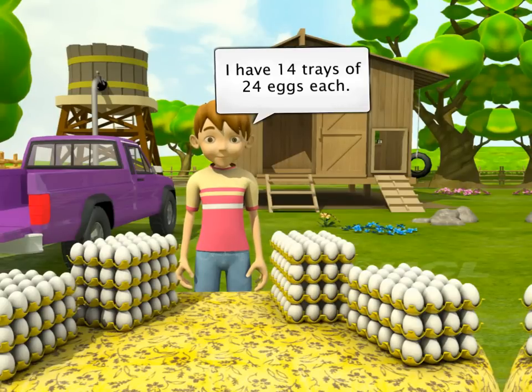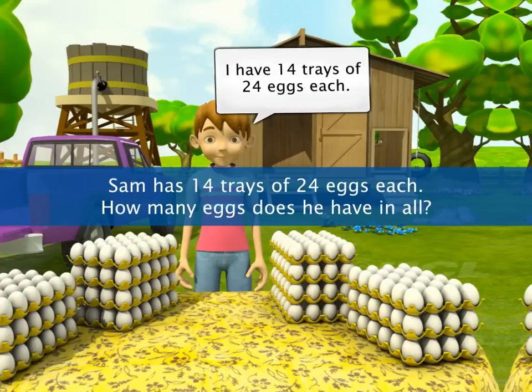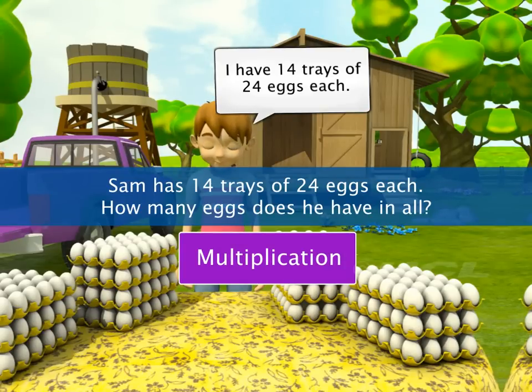Sam has 14 trays of 24 eggs each. How many eggs does he have in all? What do you think you need to do to find the answer? Multiplication, of course.